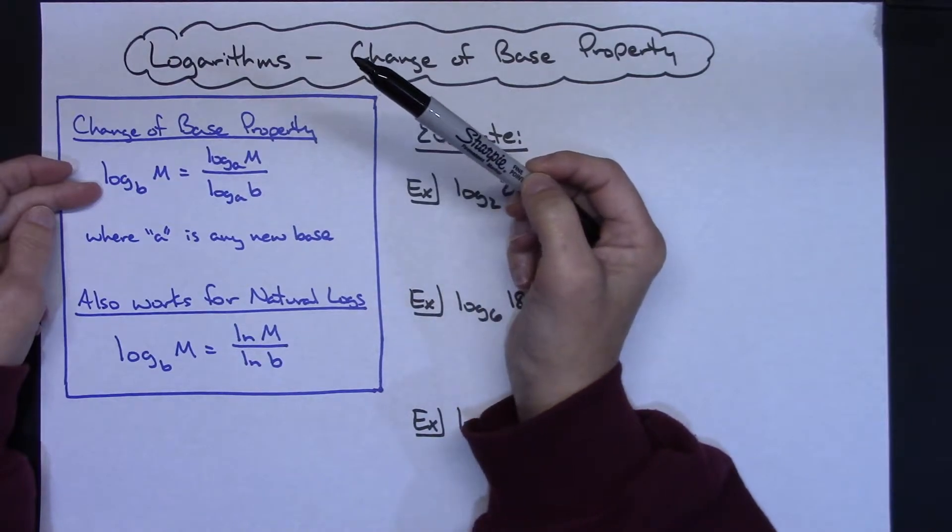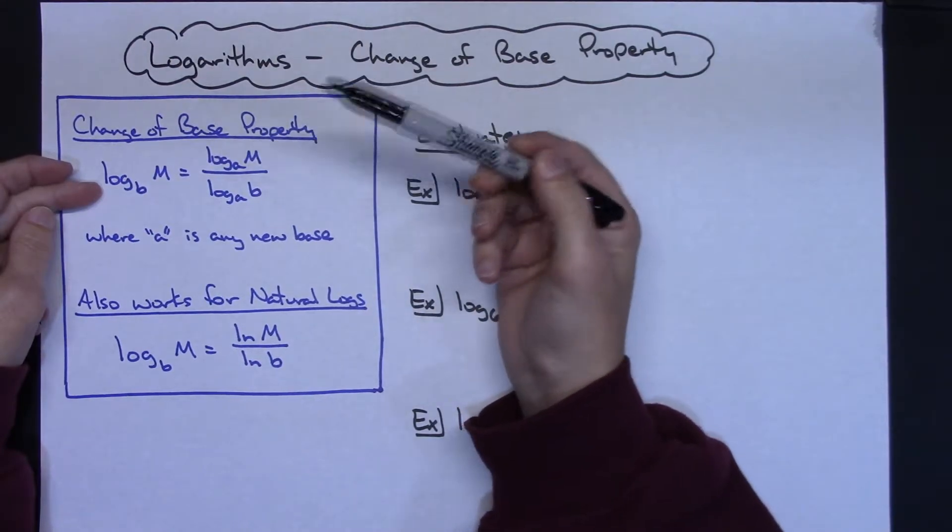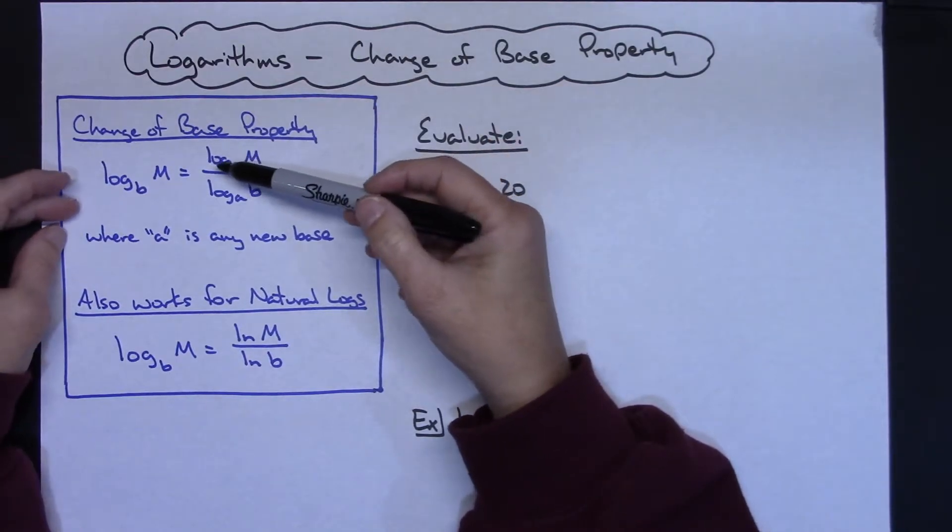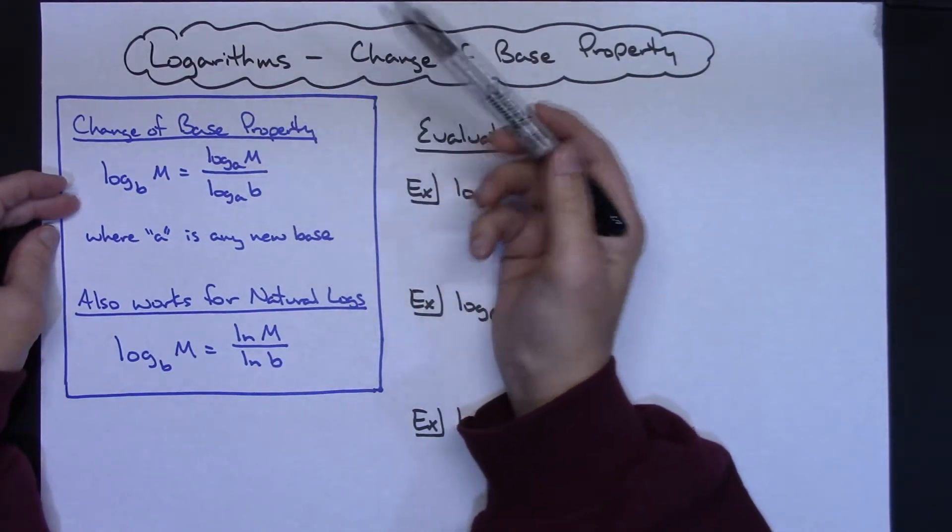A can be any new base that I want it to be, and usually most commonly we're going to change it to base 10 so that we can just do log of M over log of B.